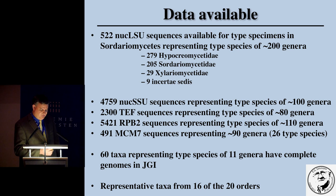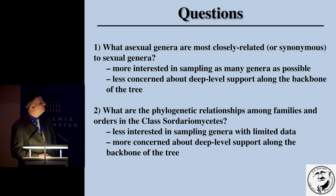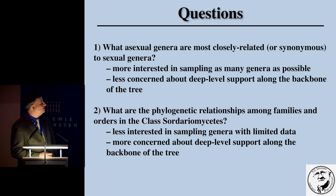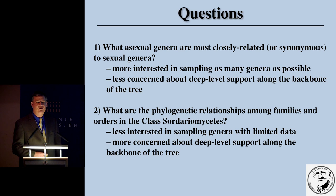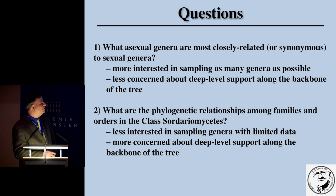We were able to gather representative taxa for 16 of the 20 orders for this talk. There are two primary questions we were interested in. The first is what asexual genera are most closely related or even synonymous with the sexual genera — this goes along with the one fungus, one name concept — where we were more interested in sampling as many genera as possible, less concerned about deep backbone support. The second question is where we are more interested in the phylogenetic relationships among higher level taxa, families, and orders in the class, where deep backbone support is critical.